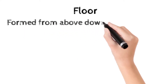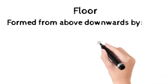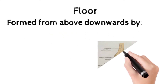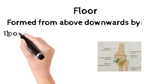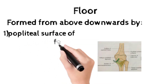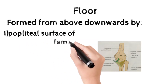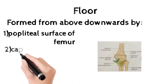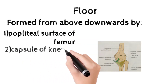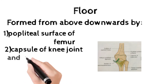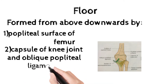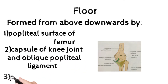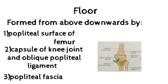Coming to the floor: the floor is formed by the following structures, from above downwards. First, the popliteal surface of the femur; second, the capsule of the knee joint and the oblique popliteal ligament; and lastly, the popliteus muscle.